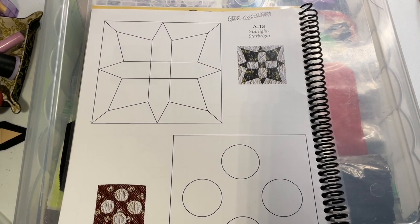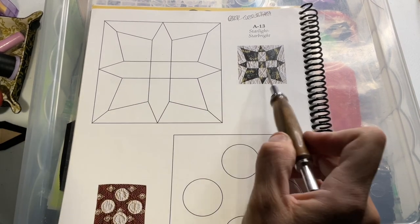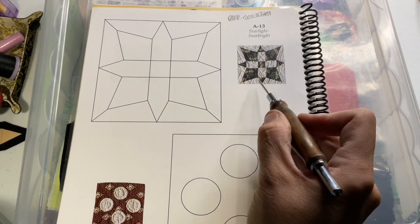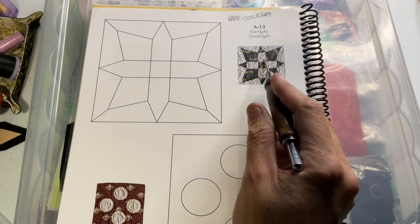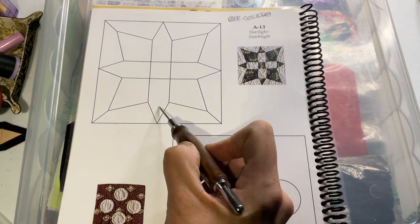Now we're at A13, which is the last block of the first row, and there's a little bit of a discrepancy here. We've got this picture that indicates that these tips are focus fabric, and so are these, but this is not what the block in the photo is.